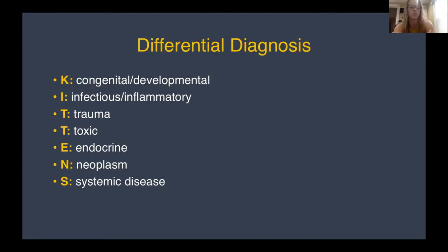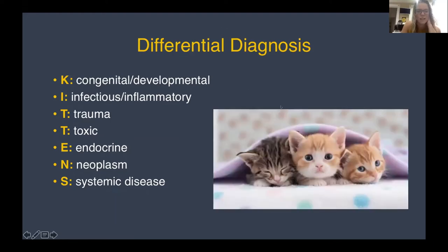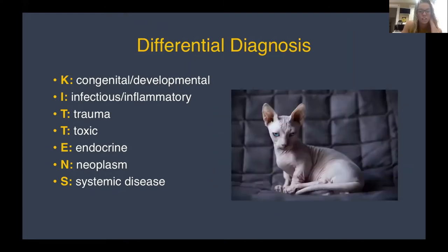When you hear stridor and upper airway obstruction, immediately start going through a differential in your head. The history is usually what narrows this differential, but you should consider everything. Has anyone heard of the KITTENS mnemonic? It's an easy way to go through a differential diagnosis no matter what field you're in. When you're being called to the emergency room for stridor, the kitten looks more frightening than you'd expect.